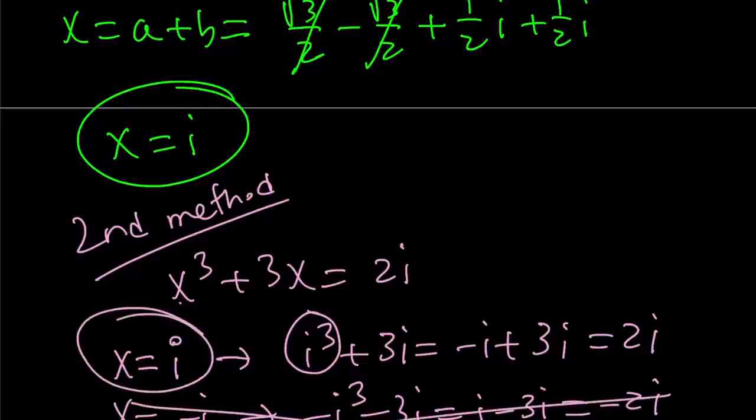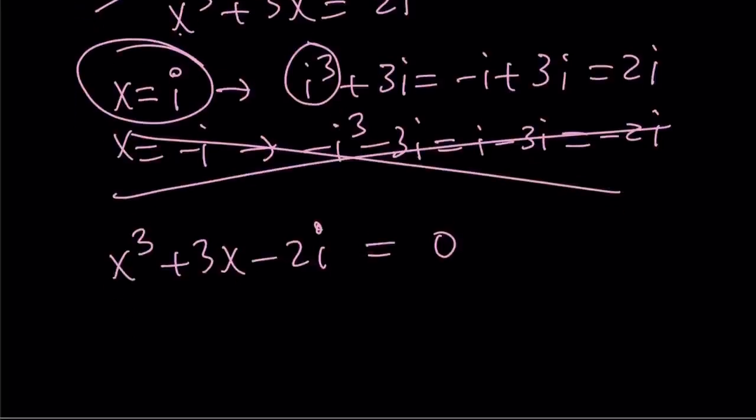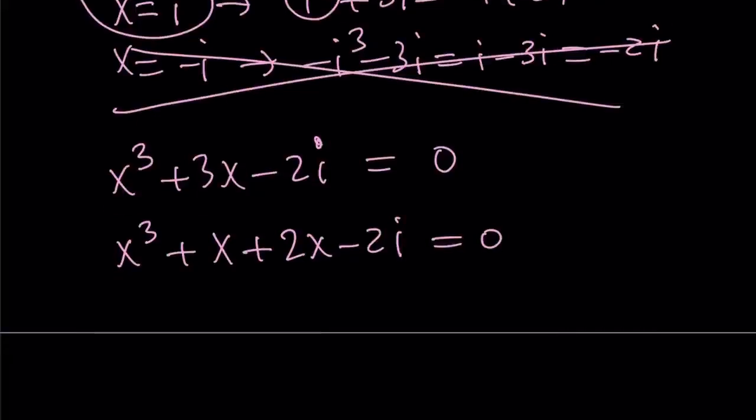How about x equals -i? If you cube -i, you're going to get -i³ and -3i, and that's just going to be i - 3i, but that's just -2i. So x equals -i is not going to work, but x equals i is going to work. So that's one of the solutions, just like we found in the first solution. But how do you find the other solutions?